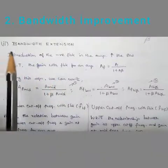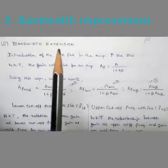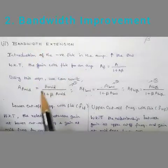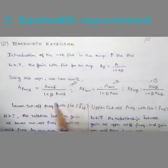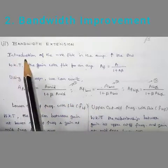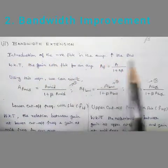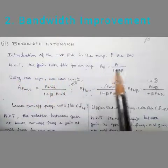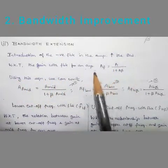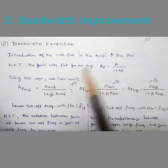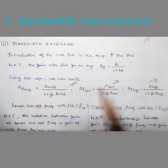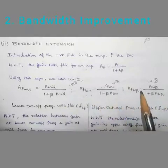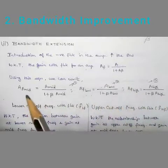The next property is bandwidth extension. Due to the introduction of negative feedback, the bandwidth is increased. To prove this, we use some derivations. The gain with feedback for an amplifier is AF equals A divided by (1 plus A·beta). We write three different equations using this expression: for lower frequency, higher frequency, and mid frequency.